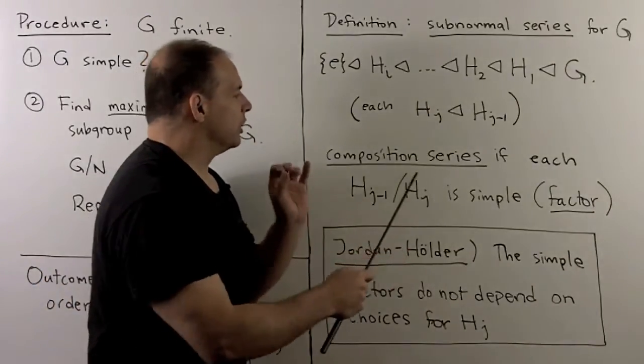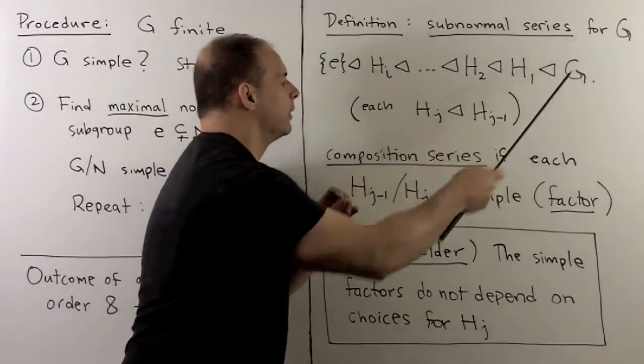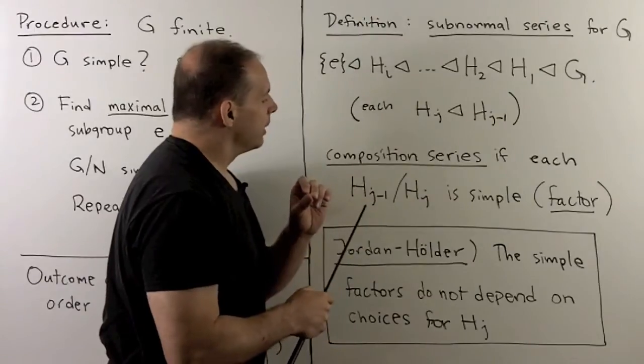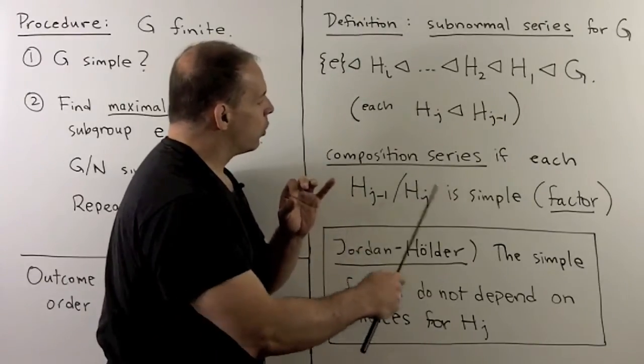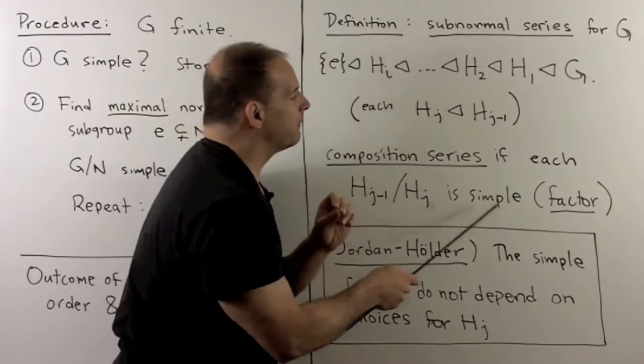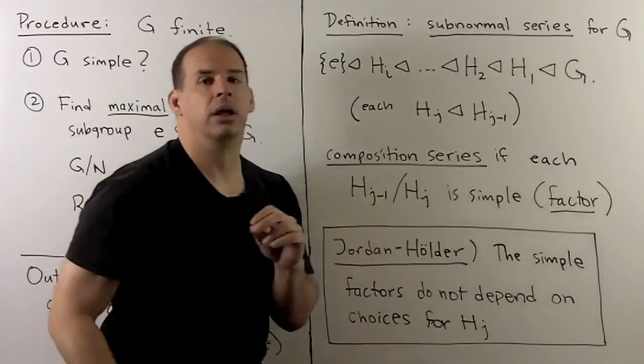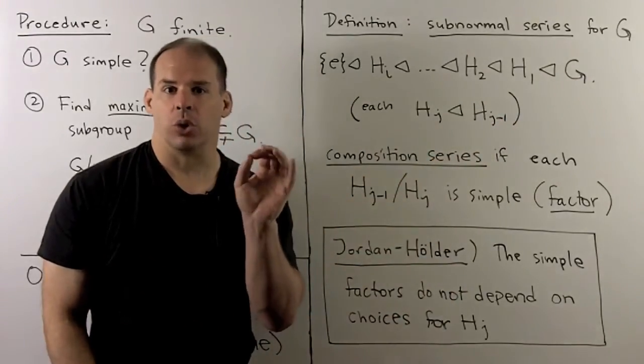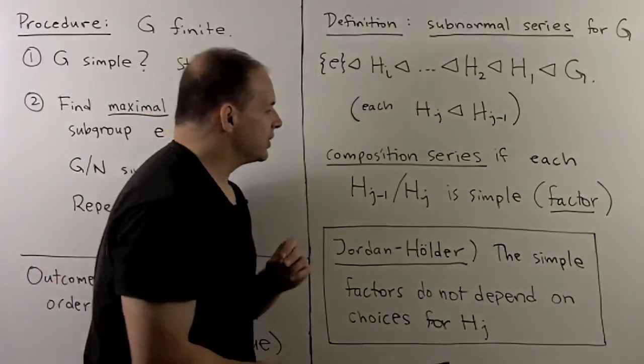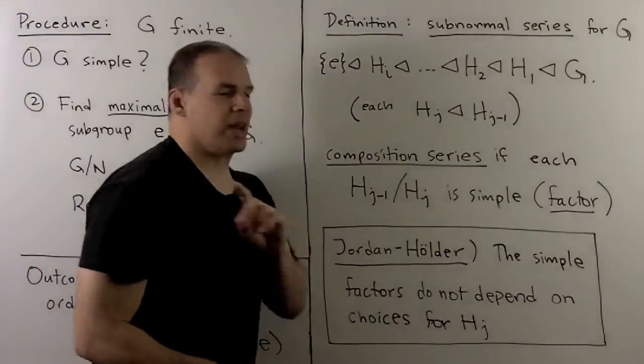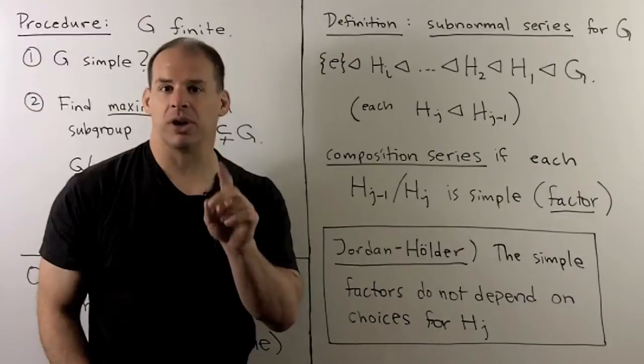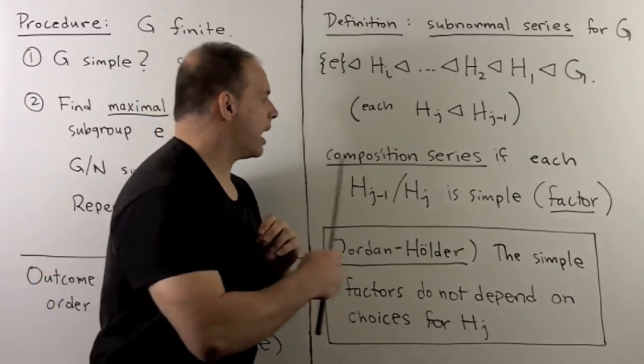So, what this is going to do for each group, I'm able to associate to it this collection of quotient groups, which we'll call the simple factors for our group. For result, we have the Jordan-Holder theorem, which says simple factors do not depend on the choices of normal subgroups that we make in the composition series.